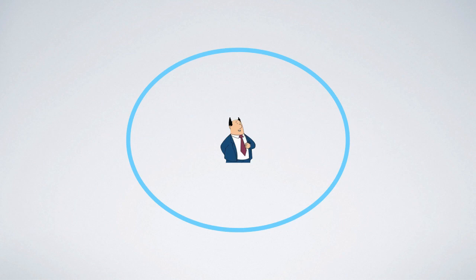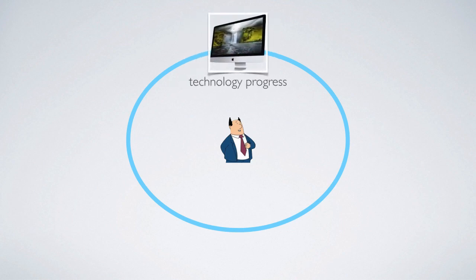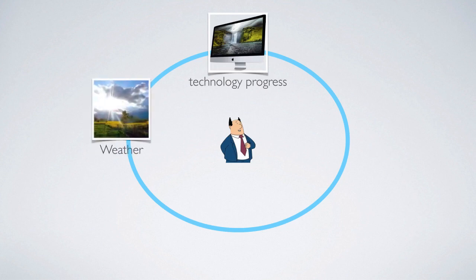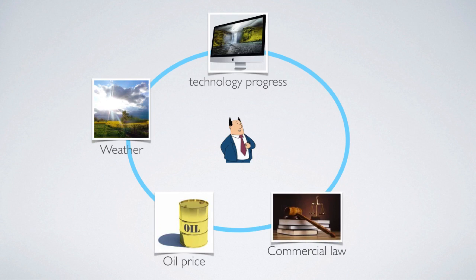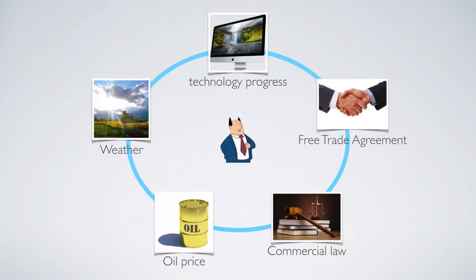What can increase the marginal productivity of inputs? The first reason could be technological progress — new technology that makes both inputs more productive. Or maybe the weather is extremely good so farmers can harvest more. Or the oil price drops, making firms more productive. Or a better legal system decreases corruption costs, so firms make better profit. Or a free trade agreement between two countries causes the firm's export costs to decrease since tariffs disappear.